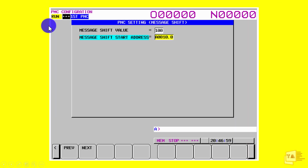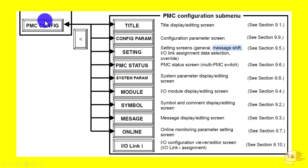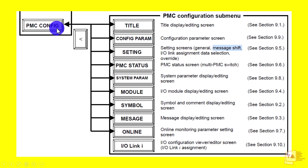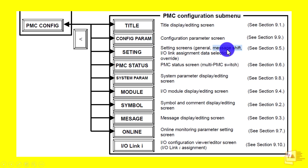When we need to make a message process, we need to configure it. So in the PMC Configuration, you can use PMC Maintenance, PMC Status, or PMC Configuration. You can use PMC Status setting. So in the setting, you can use message shift in the option.